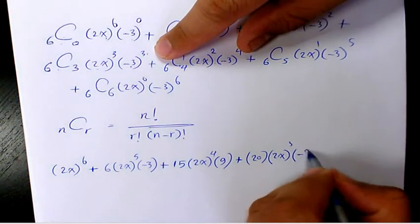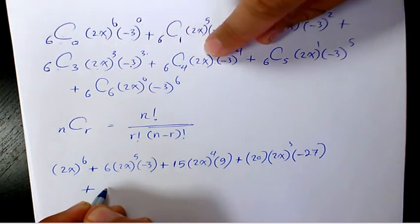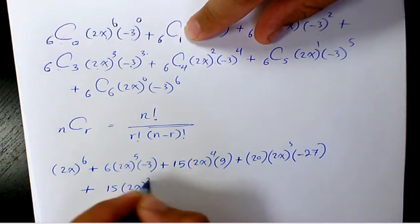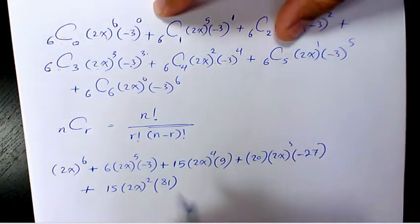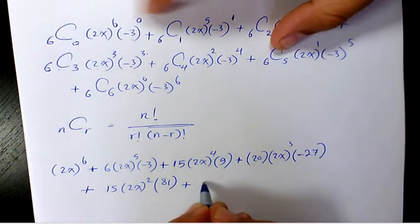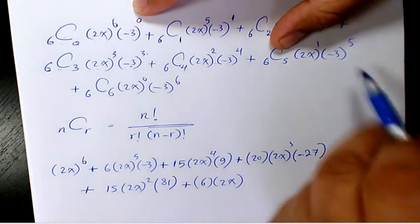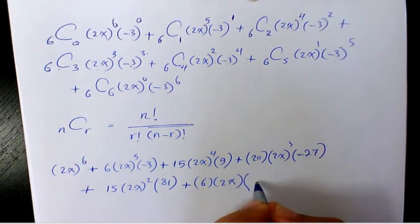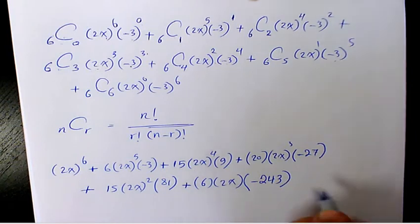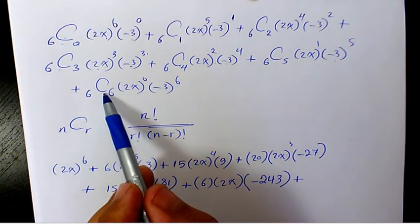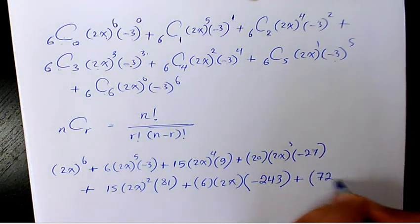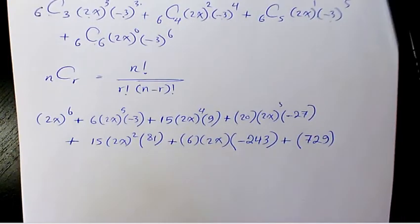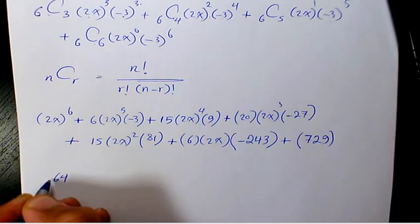(-3)^3 is negative 27. Plus 15 times (2x)^2 times (-3)^4 is positive 81. Then 6 times (2x) times (-3)^5 which is negative 243. Finally, 1 times 1 times (-3)^6 is positive 729.